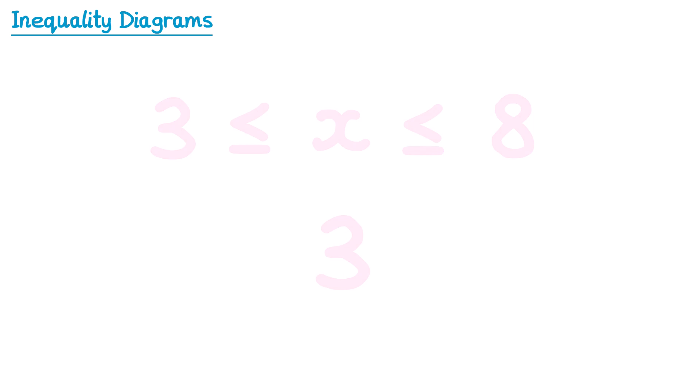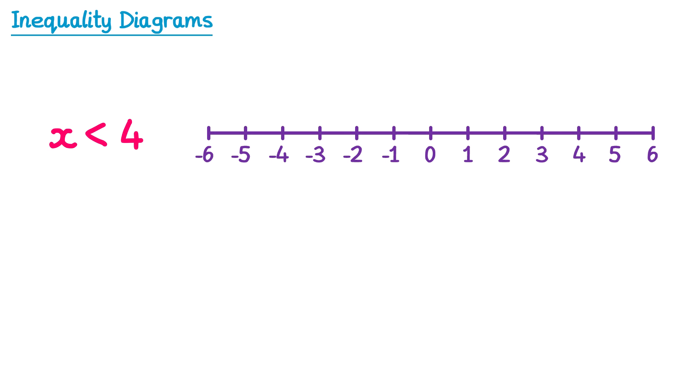Sometimes exam questions ask you to represent these inequalities onto a number line. We're going to start with x is less than 4. To represent this on a number line, we first draw a circle above the number in the inequality — so a circle above the number 4. We then add an arrow coming out of this circle to indicate the direction of the numbers that are allowed. Since x is less than 4, we draw an arrow going to the left. Make sure it goes to the very end of the number line.